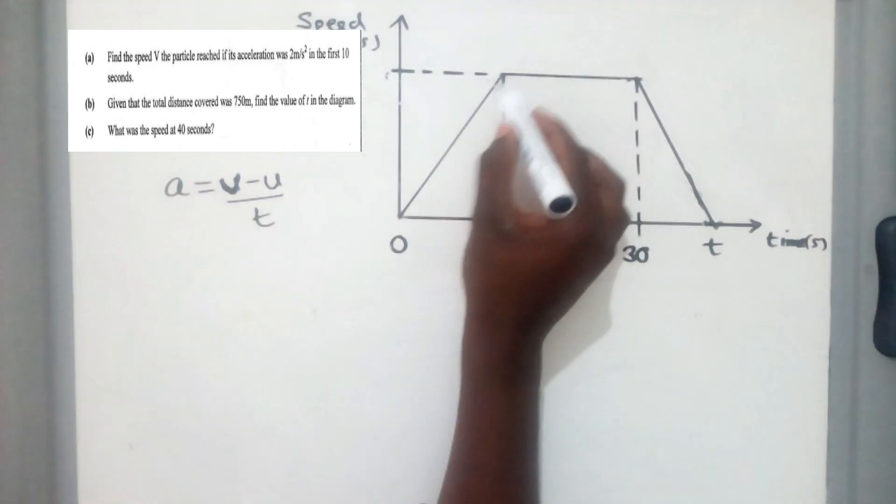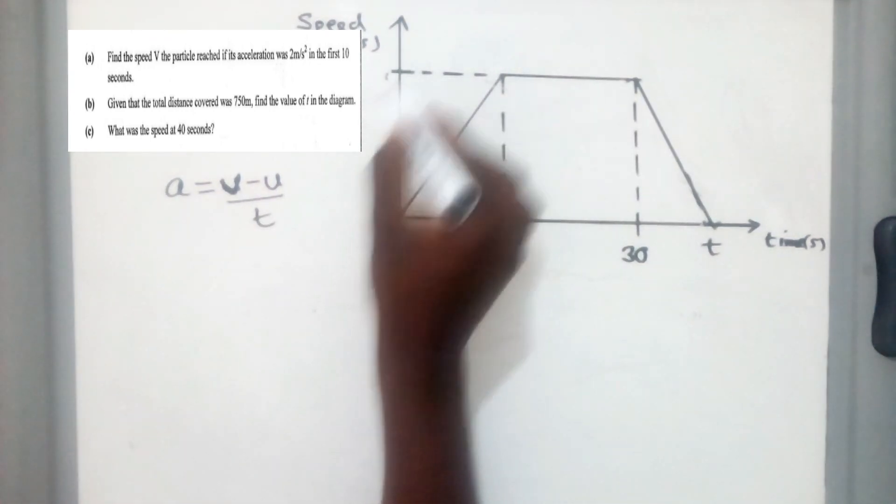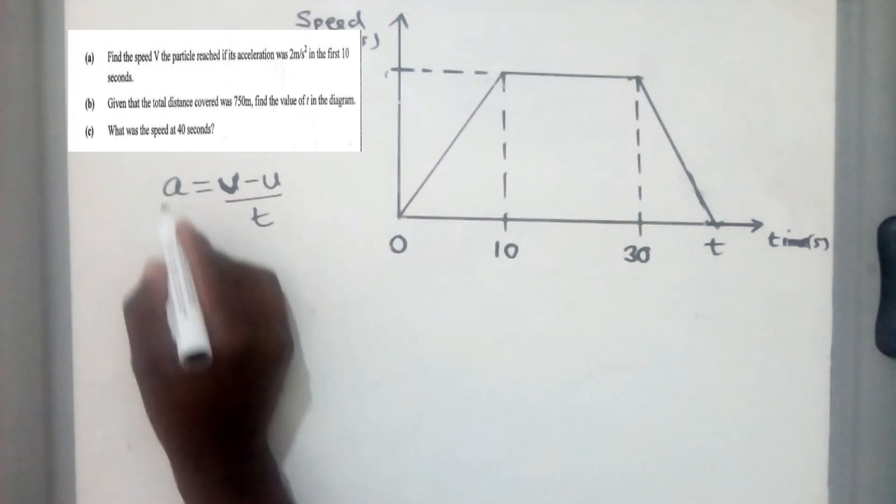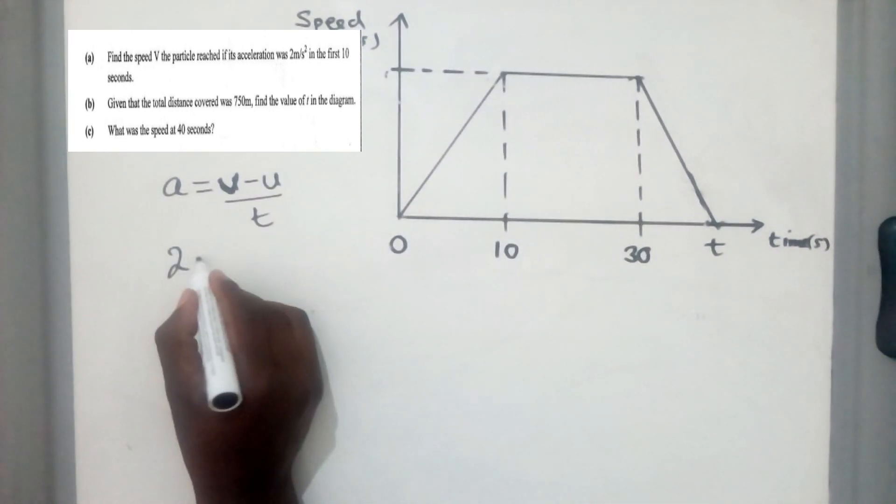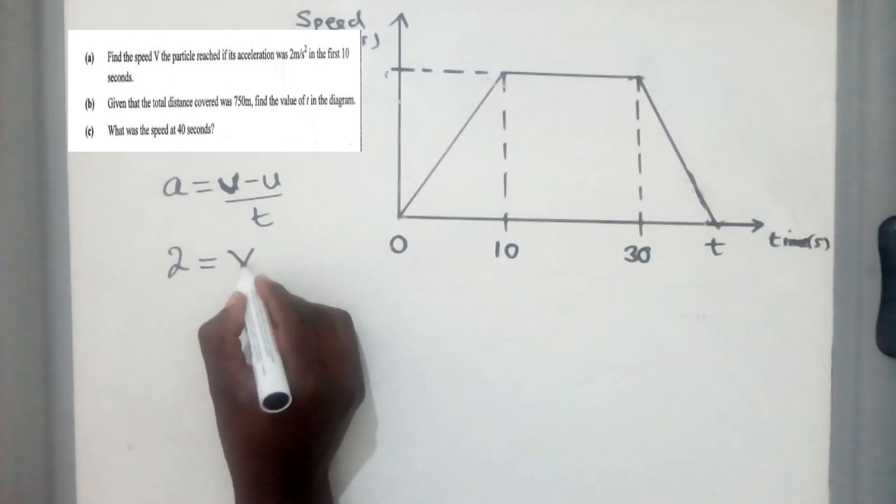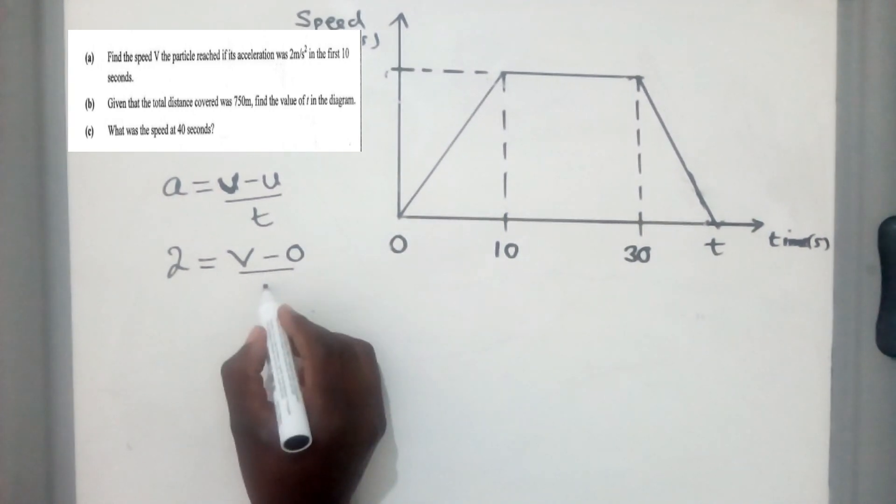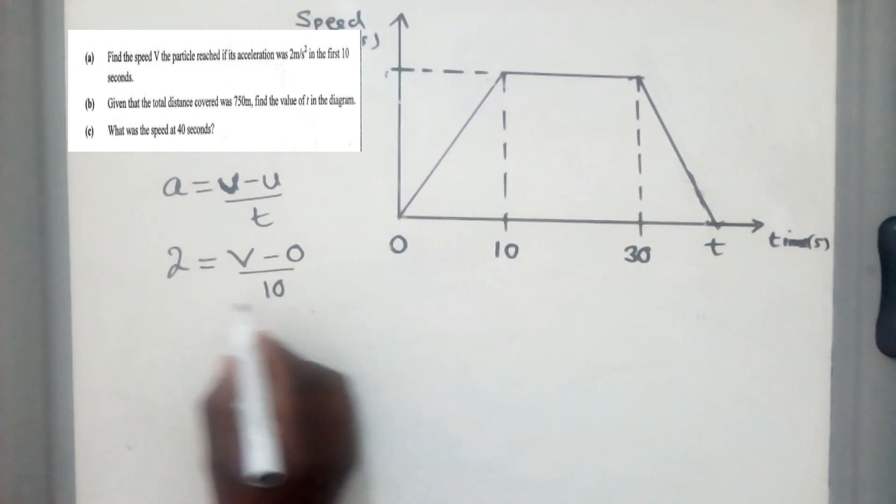So this is v and this is u. v is a final velocity somewhere here. Final velocity here. And u is the initial velocity. Time is 10 seconds. So acceleration will be given to be equal to 2. Final velocity, we don't know. We'll just write v. And then the initial velocity is 0. Time there is 10 seconds.